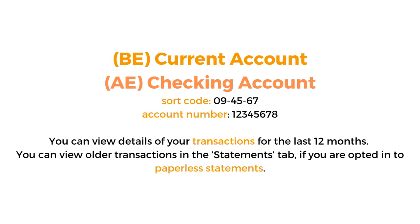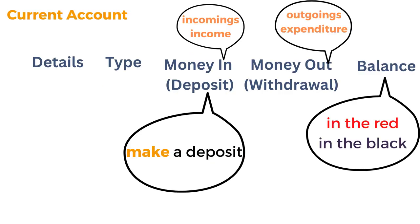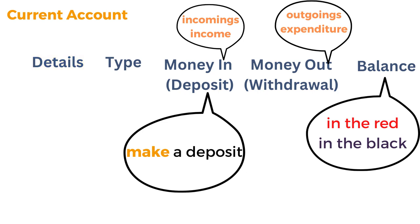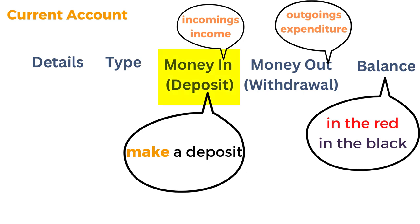Statements — you can get them by mail, you can get them at an ATM, or these days you can opt in to get paperless statements, which is what I do. When I look at my statements, there's some useful vocabulary. For each payment, there are details about the organisation making or receiving the payment, and details about the type of payment. There's also a list of money coming into my account — these are deposits, and the verb is 'make a deposit'. Or these are my income, my incomings.